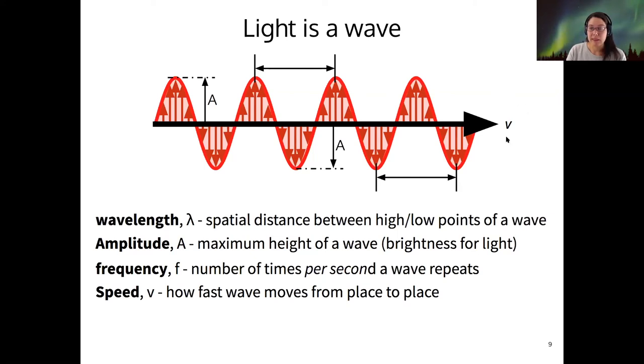And then finally, the speed is just how fast the wave is moving. And these three quantities—wavelength, frequency, and speed—are all related to each other by this equation: V equals F lambda. The speed of a wave is equal to the frequency of the wave times its wavelength.